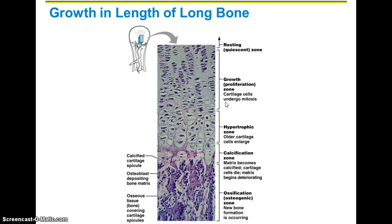The second zone is the transitional zone, where older cells get larger, the matrix calcifies and hardens, cartilage cells eventually start to die, and the matrix deteriorates — then we start forming the actual bone. The third zone is the osteogenic zone, where new bone forms, and eventually this is going to develop into the epiphyseal line.